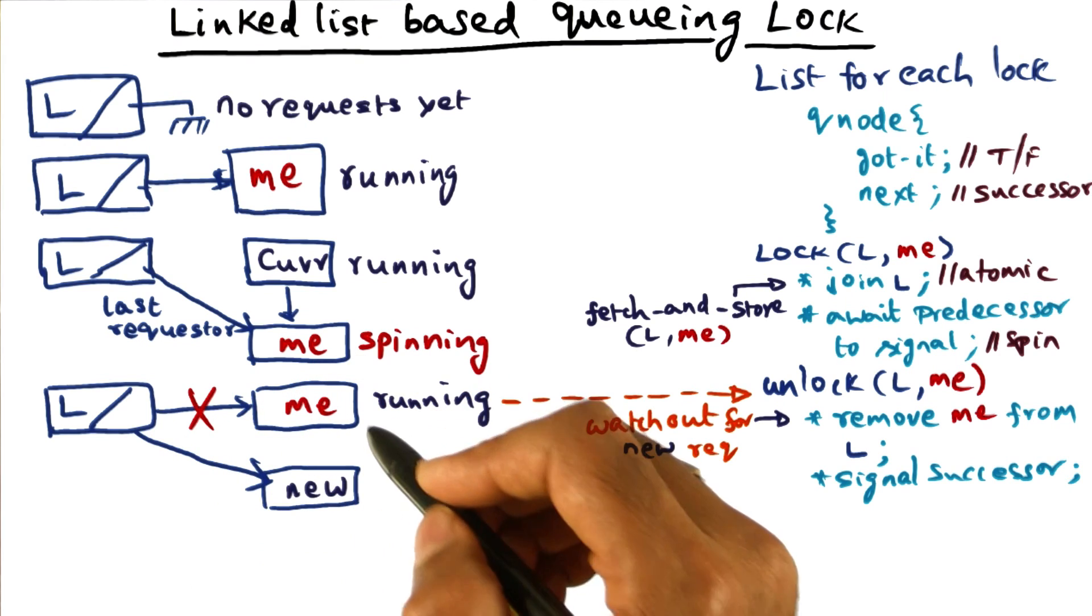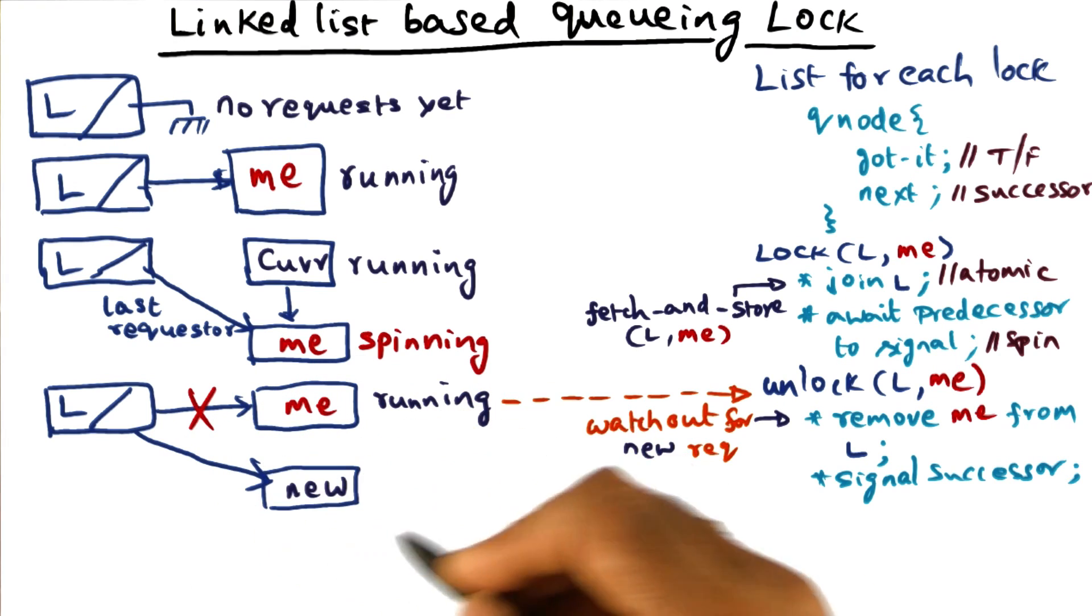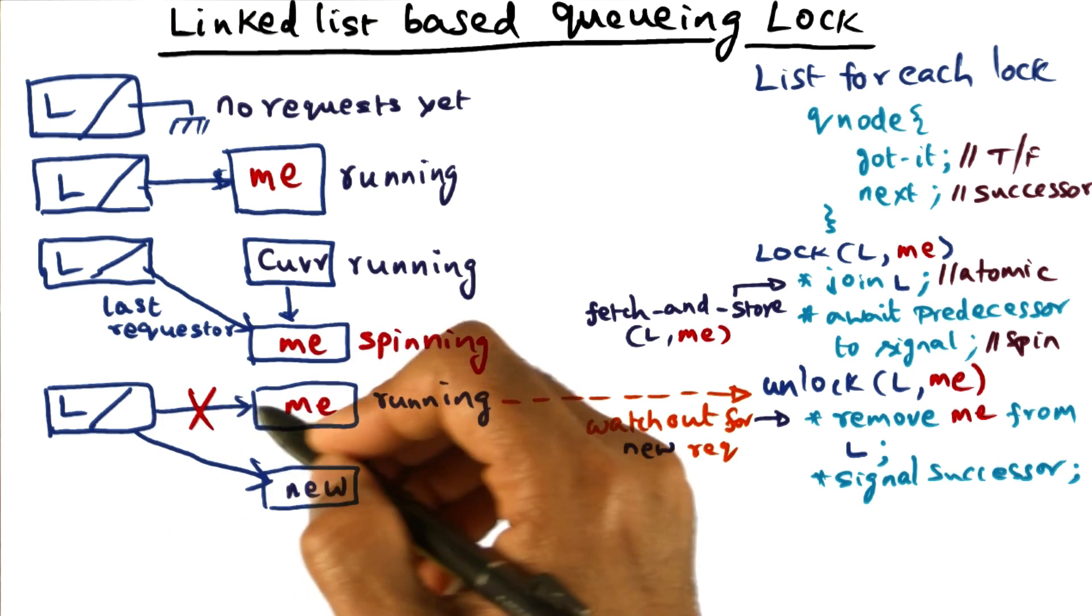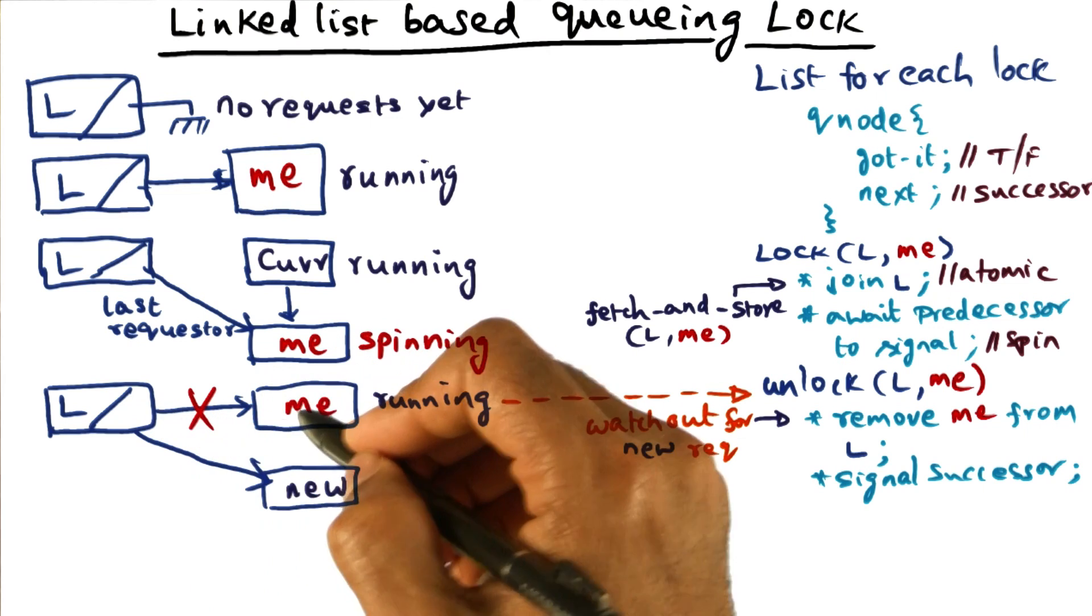But before I do that, I have to double check if there is a request that is in the information. In other words, I want to have an atomic way of setting this guy to nil, if in fact he's pointing to me.